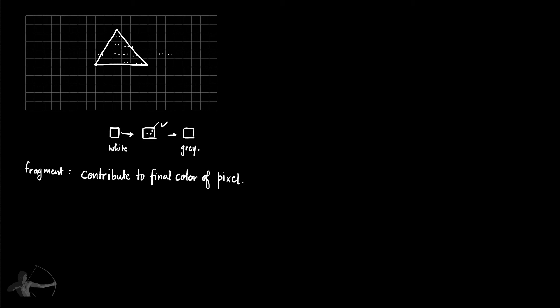This rasterization rule is called multi-sampling rasterization. That is it for this chapter — thank you so much for listening.